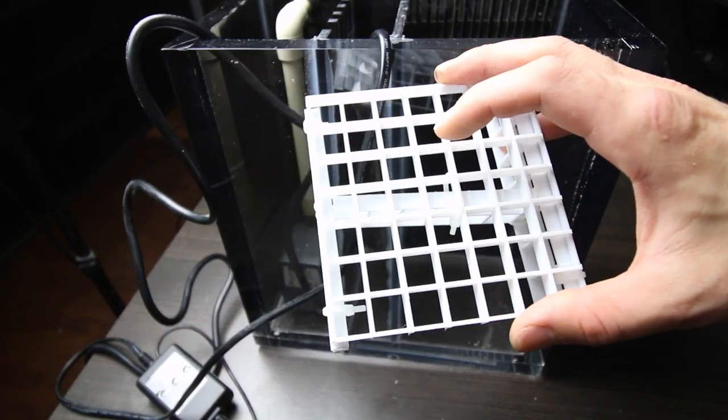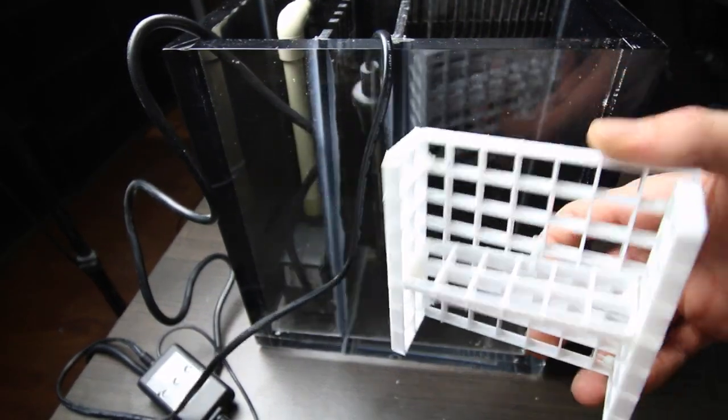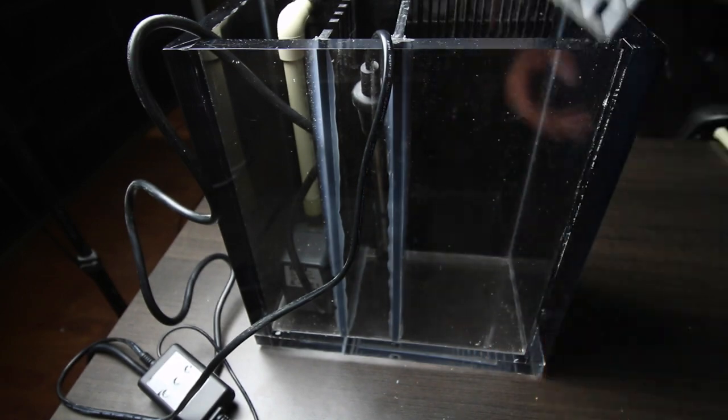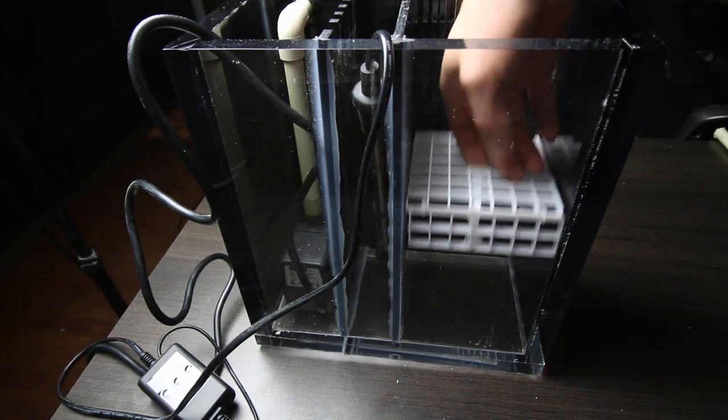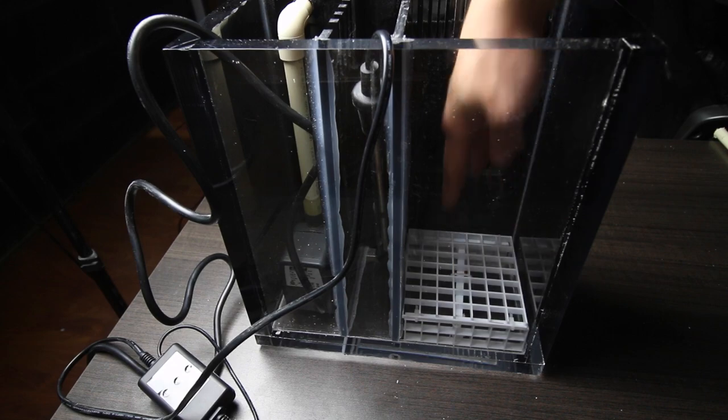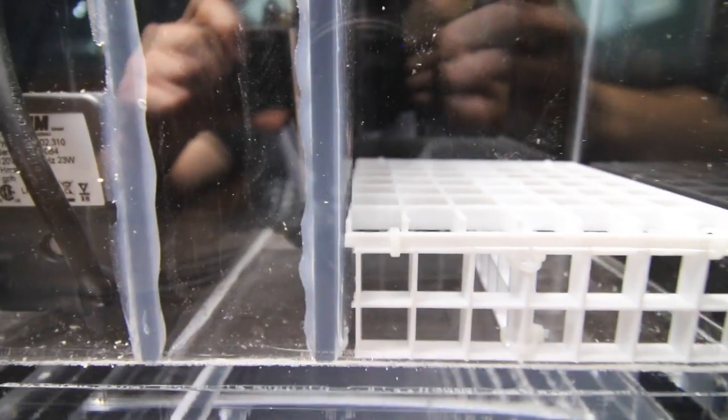Now I was ready to move on to the actual filtration portion. Given that the water is going to flow down through this and underneath, I couldn't have the media sitting at the bottom of this compartment, so I rigged up a lighting diffuser stand with some zip ties. This was going to provide me with a pretty sturdy stand for the media to set on while keeping the flow away completely free of any media.